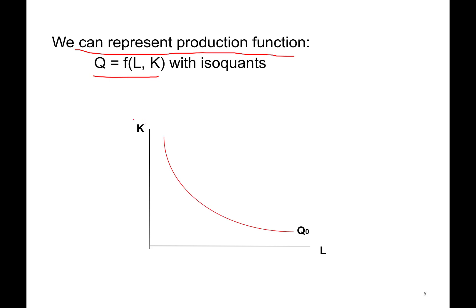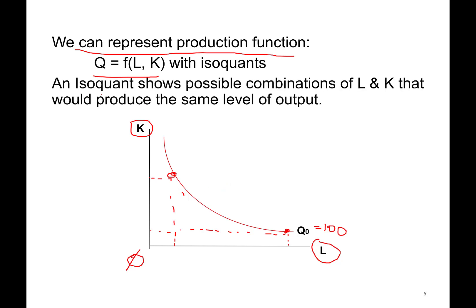Isoquants look like this: on the y-axis I have capital — the number of units of capital used, increasing as we go up — and on the x-axis is labor. Q0 represents a level of quantity; let's say I want to produce 100 Ford F-150 trucks from one production factory. You can use different combinations of capital and labor to get this output — lots of labor and only a few units of capital, or a lot of capital and relatively fewer workers — to produce the same number of units. An isoquant shows possible combinations of labor and capital that would produce exactly the same level of output.